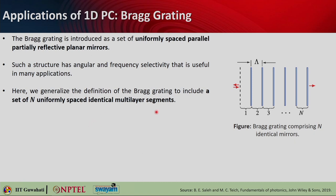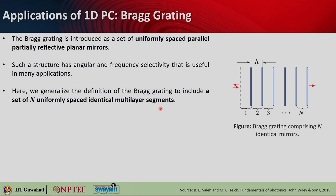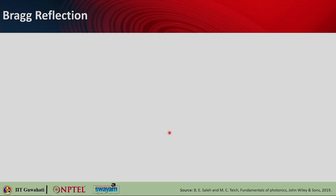We will generalize the definition of Bragg grating to include a set of n uniformly spaced identical multilayer segments. Devices fabricated using this grating are distributed Bragg reflectors (DBRs) and fiber Bragg gratings (FBGs), often used in resonators and lasers. FBGs are also very popular for sensing applications because the refractive index of the surrounding media can change, altering the wavelength of the reflected light, which can be used as a sensing mechanism.